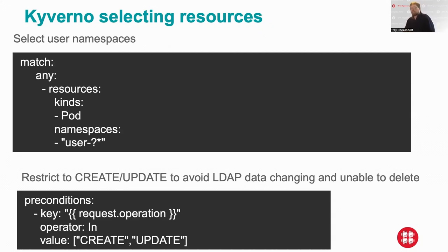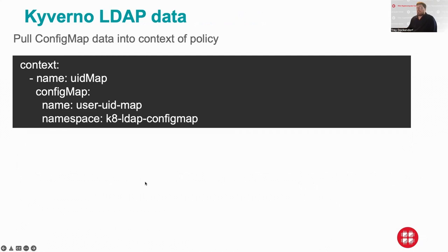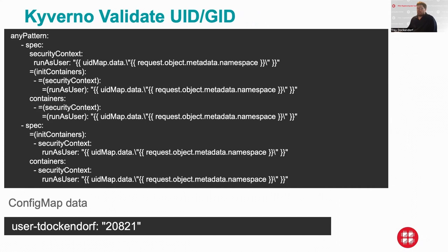Here's an example of how we're selecting resources in the policies. You can see we have the user-prefix, which makes it easy to match all user pods by namespace. One thing we learned very quickly: you can only validate on create and update when dealing with LDAP data, because if LDAP data changes while the pod is running, it might become impossible to delete. Here's an example of getting LDAP data into the context for the policy — we're getting the UID mapping, and then validating run-as-user using that UID. The data looks like 'user-dash-myusername' with the UID, and we ensure that UID is what's being used for run-as-user.